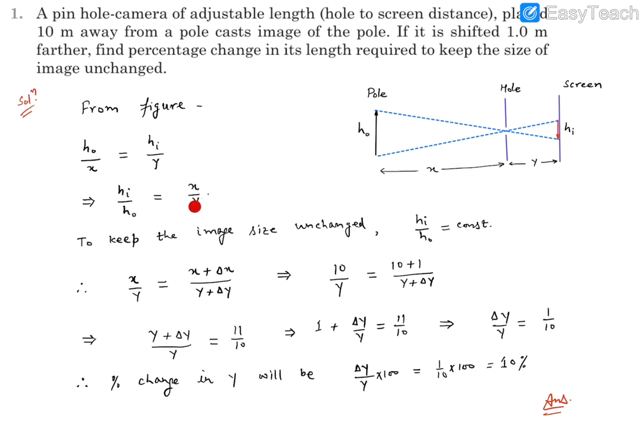Now the pole is a fixed height and we want that the size of image remains unchanged. That means we want this height of image should remain unchanged. So h_i by h naught should remain constant. Now we are claiming that this is a constant, that means the change in x and the change in y will be such that the ratio remains constant.